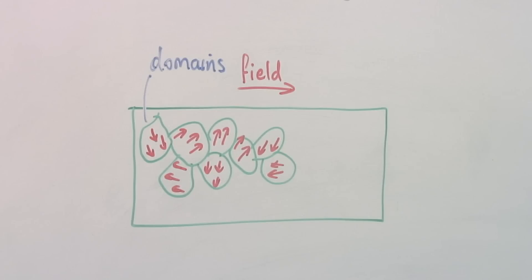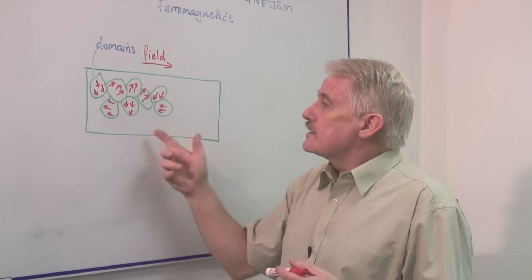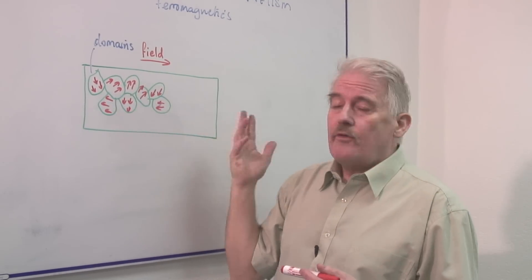Within a ferromagnetic, within for example iron, steel, and so on, it is seen that there in fact are what they call domains.